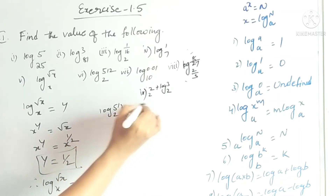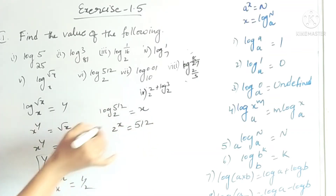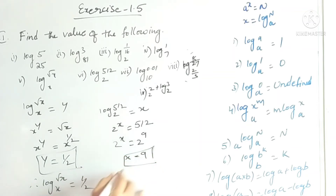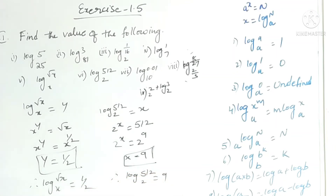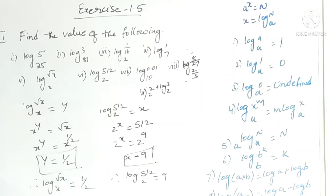The sixth problem is log 512 base 2. Let it be x. Then 2 to the power x equals 512. Expressing 512 as a power of 2: 2^9 = 512. So 2^x equals 2^9, meaning x equals 9. Therefore log 512 base 2 equals 9. Intuitively: how many times must we raise 2 to get 512? Nine times. How many times to get √x? 1/2 times.